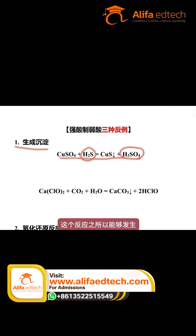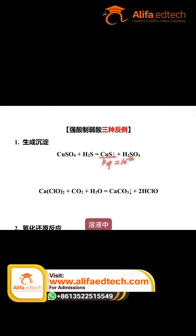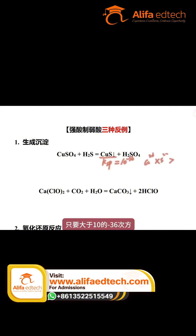This reaction can occur because the resulting copper sulfide has an extremely small solubility product constant. Textbooks give a value on the order of 10 to the negative 36th power. This means that in the solution, as long as the concentration of copper ions multiplied by the concentration of sulfide ions is greater than 10 to the negative 36th, they will react to form a copper sulfide precipitate.